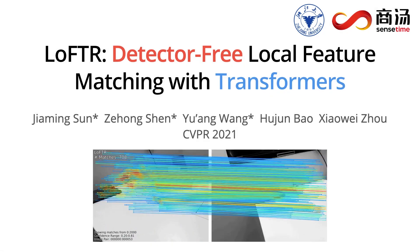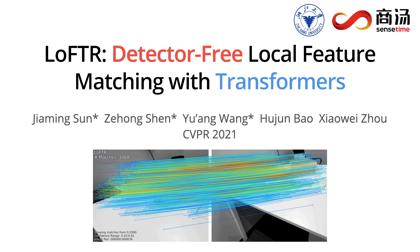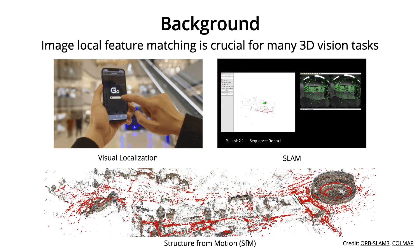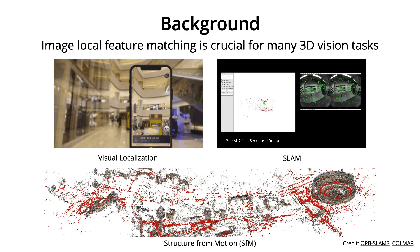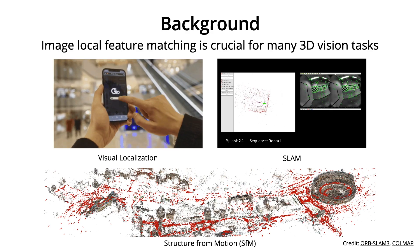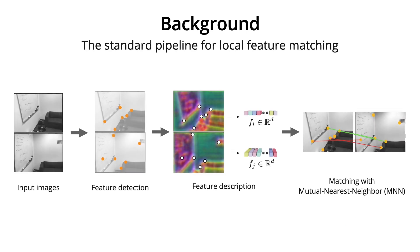We present LOFTR, Detector-Free Local Feature Matching with Transformers. Image local feature matching is crucial for many 3D vision tasks, such as structure-from-motion, visual localization, and SLAM. The standard pipeline for local feature matching can be separated into three phases: feature detection, description, and matching.